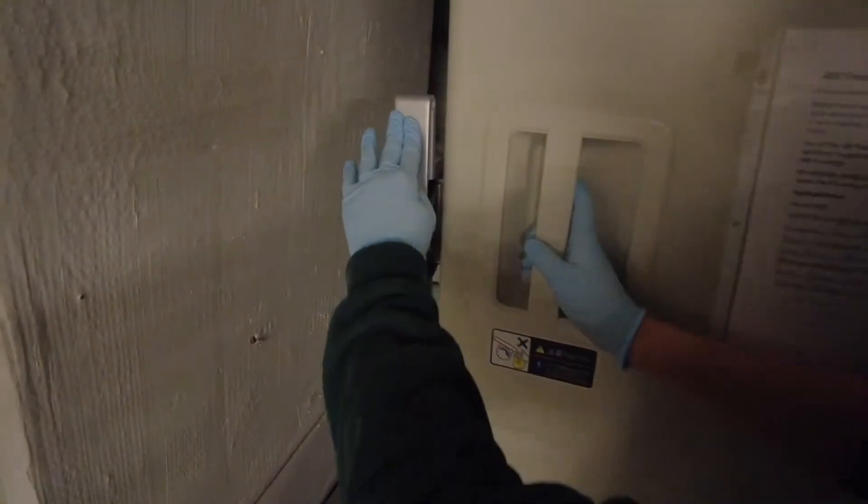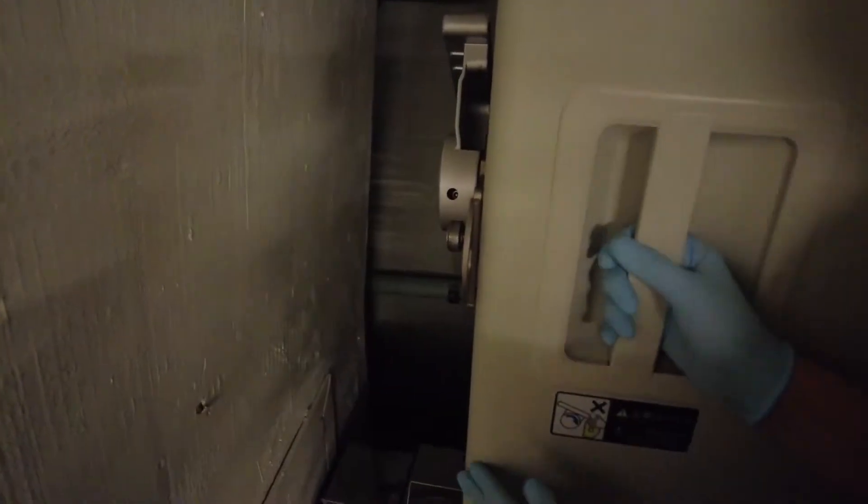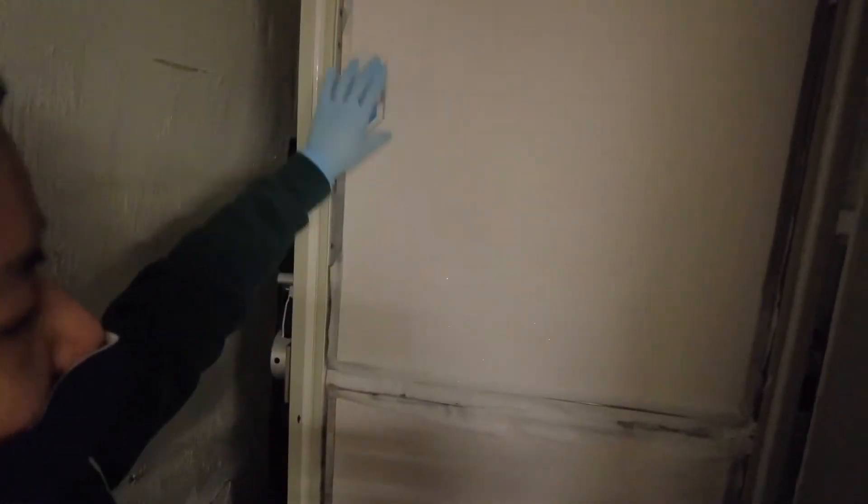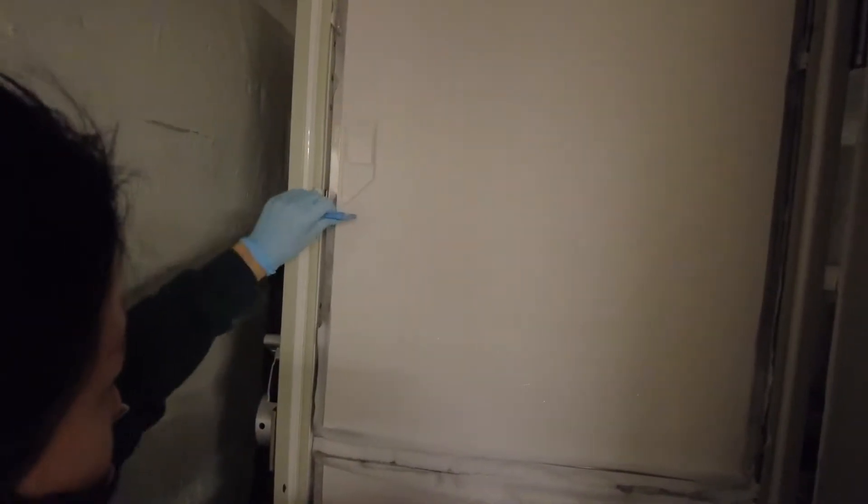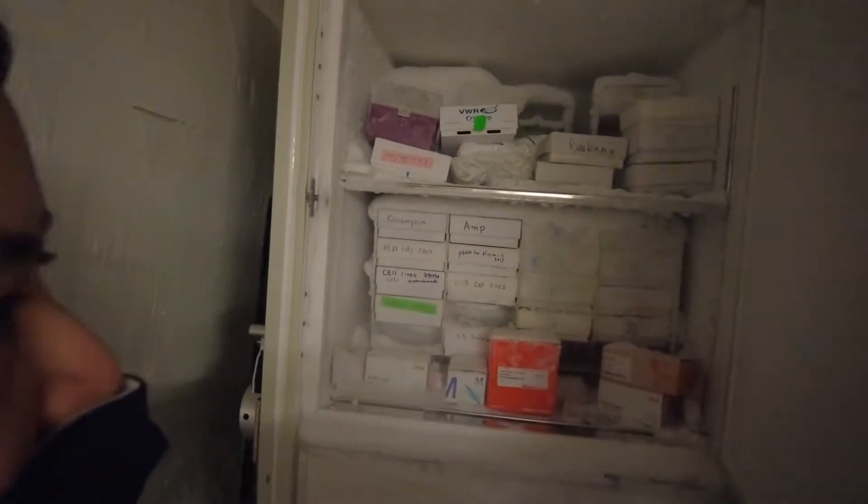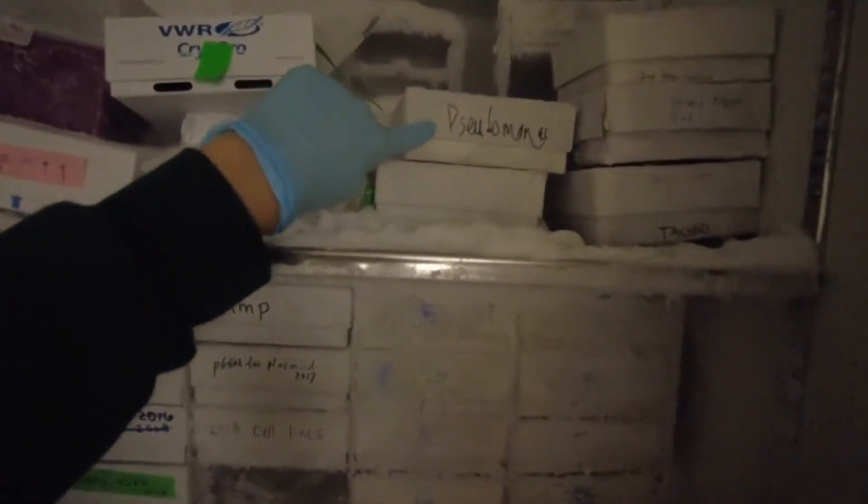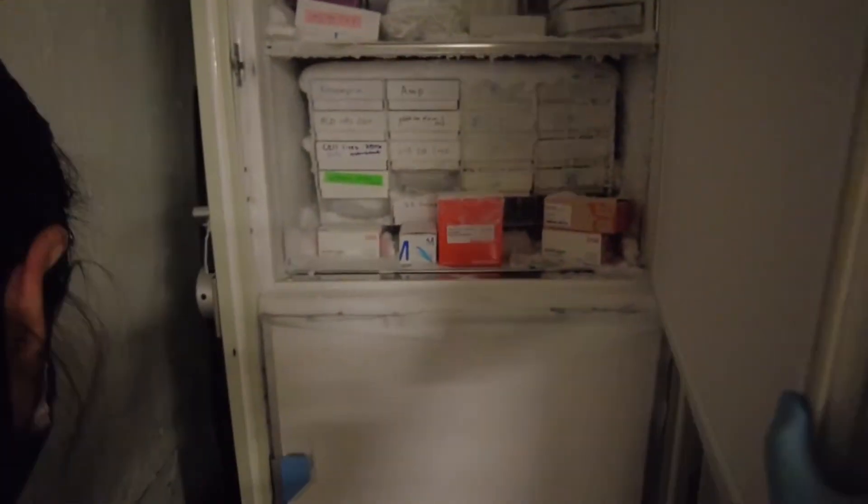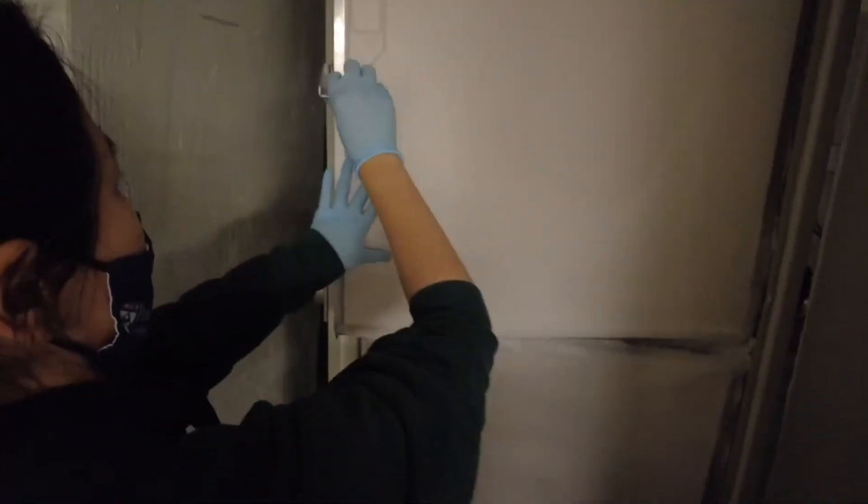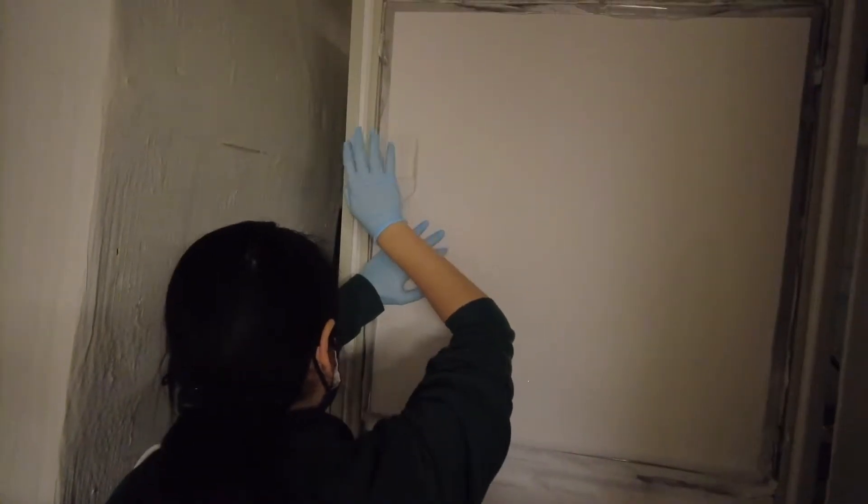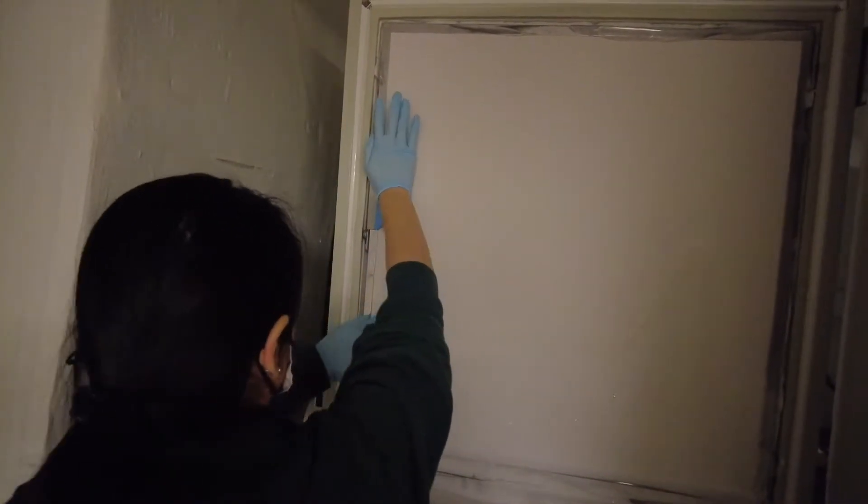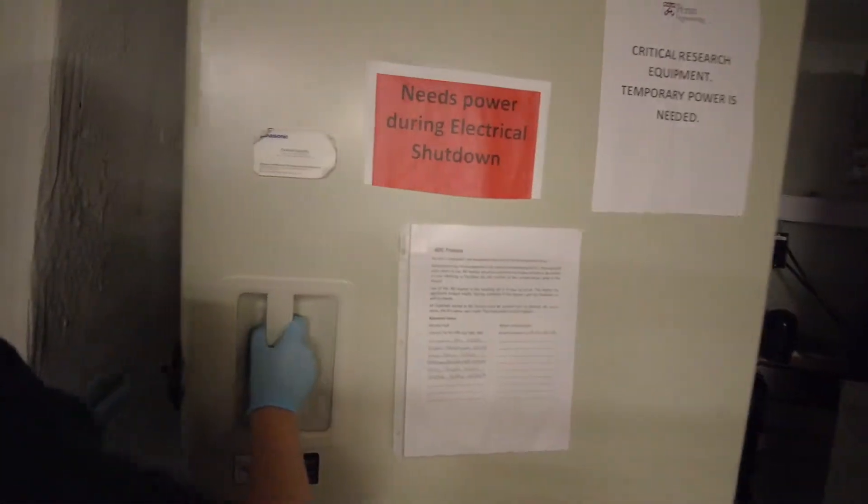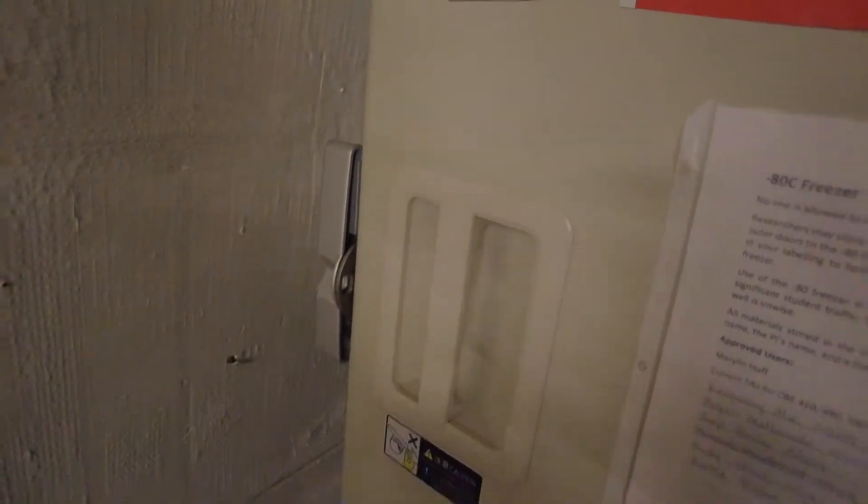First you open this latch switch and then you open this outer door. It's kind of hard for Ivy too. Our box is on this half of the freezer. We'll open this one and you'll see this box here, Pseudomonas. Just take this one out and sit it down, close this door and close this door.